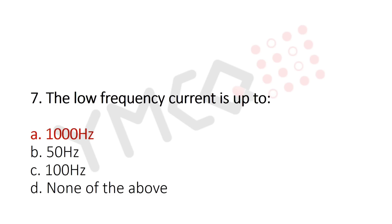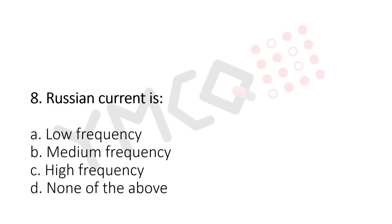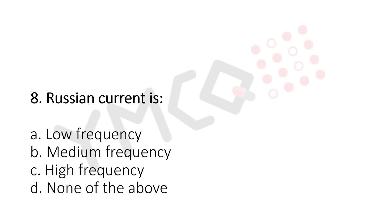Question 8: Interference current is — option A: low frequency; option B: medium frequency; option C: high frequency; option D: none of the above. The answer is option B: medium frequency.